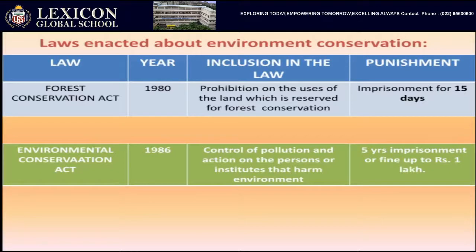The government passed rules saying land conserved for forest should be conserved for forests only — there should be no deforestation. Any person found violating this has to be imprisoned for 15 days. The next act passed was the Environmental Conservation Act in 1986.